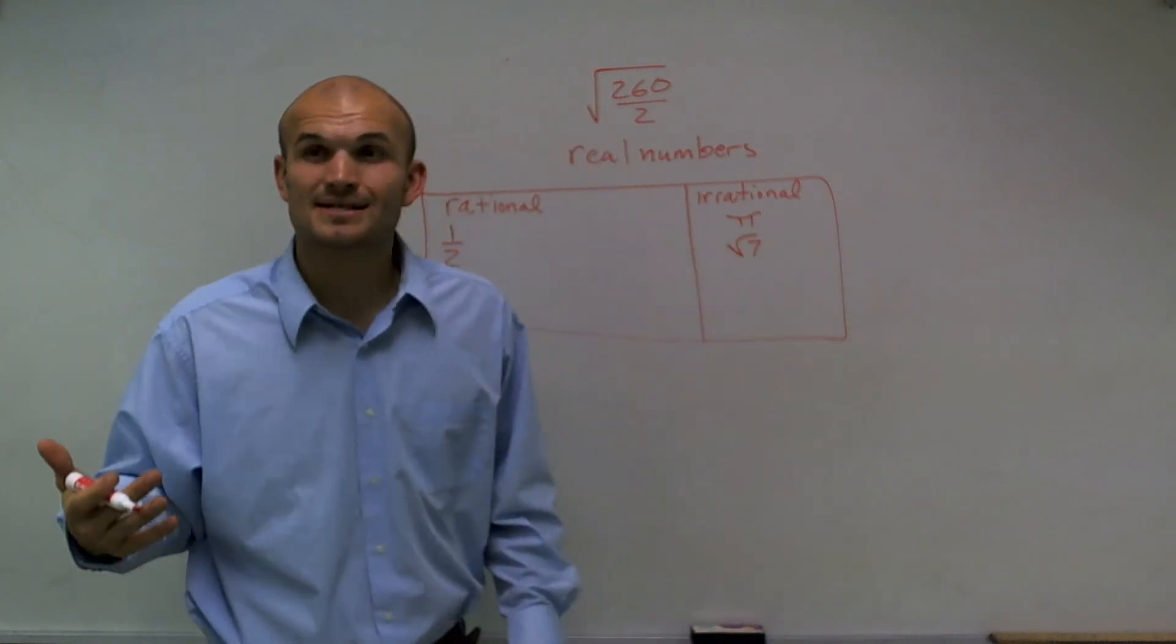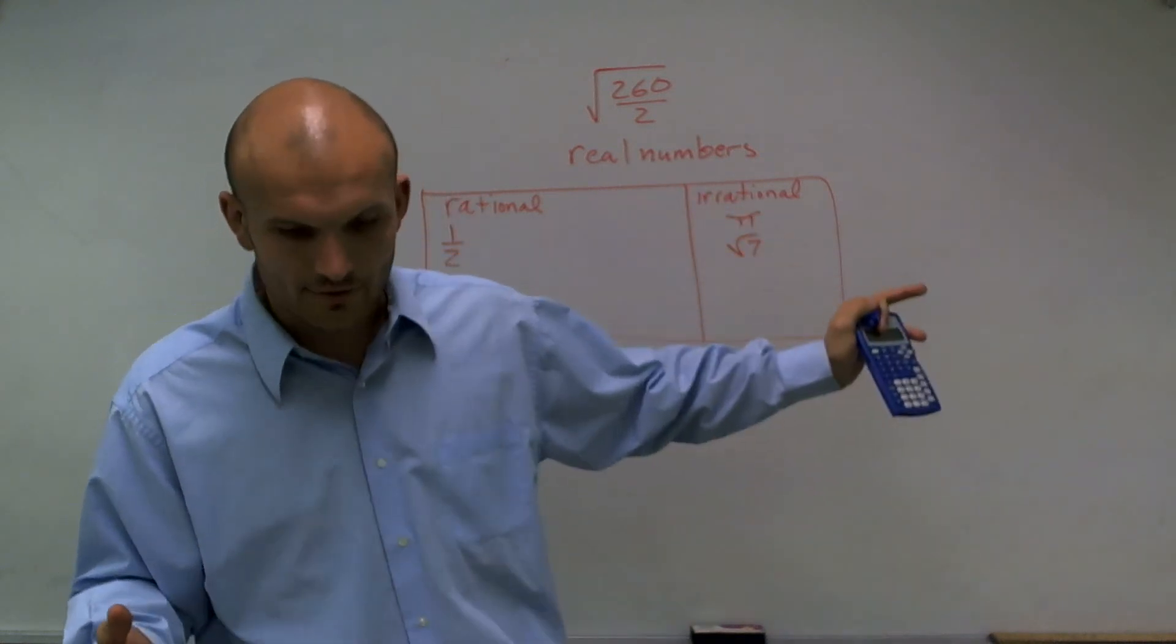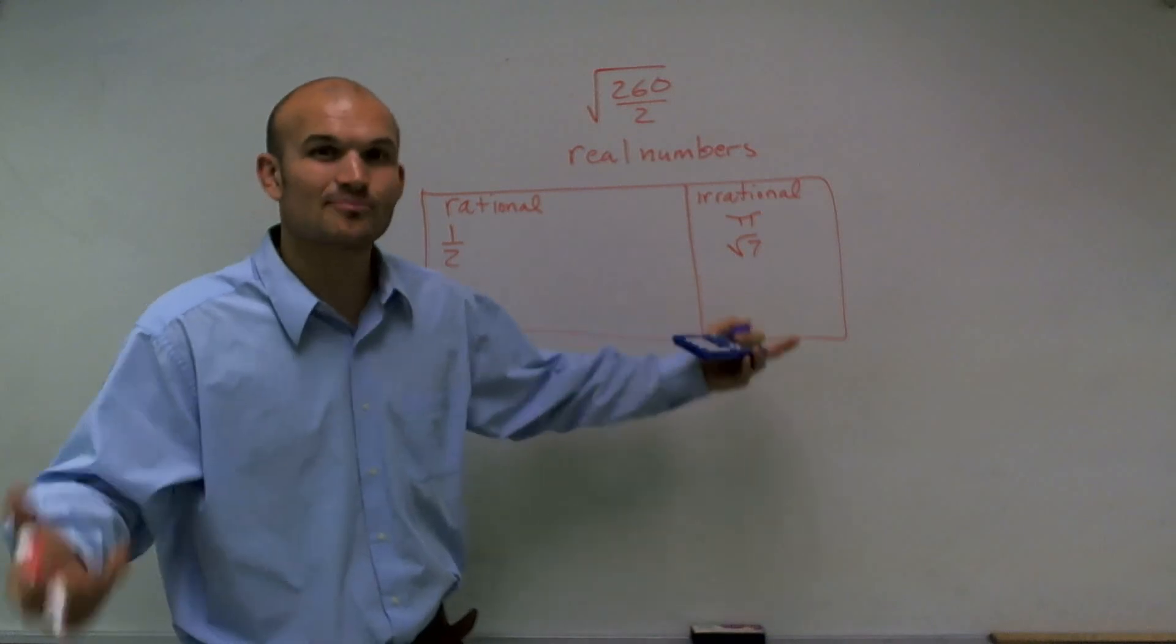So when I just write the square root of 7, if I just write 2.46, that's an approximation.